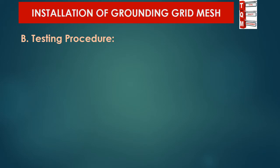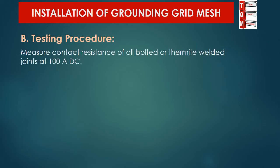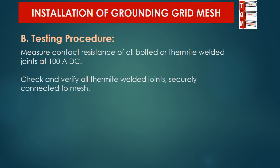Testing is the second part of this procedure. Before backfilling the overlaid grounding grid mesh, ensure the following tests and checks are done. Number 1: measure and test the contact resistance of all bolted or thermite welded joints at 100 ampere DC.